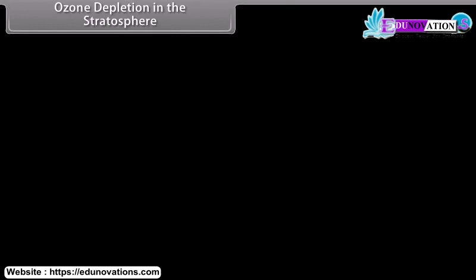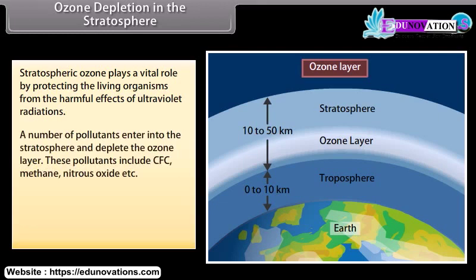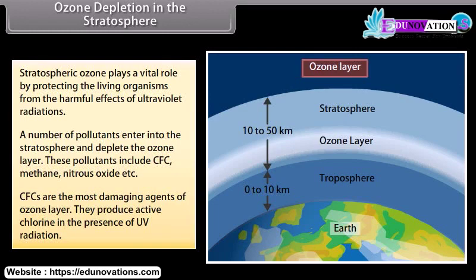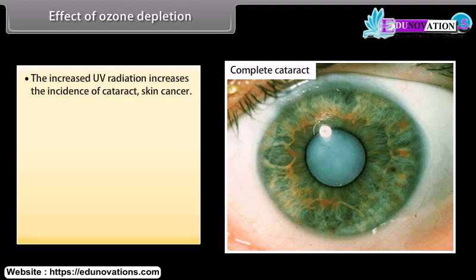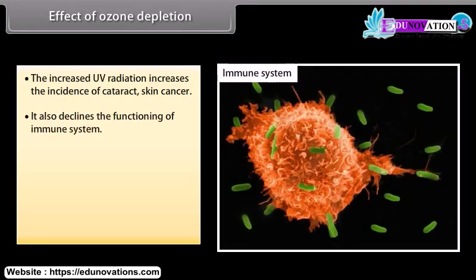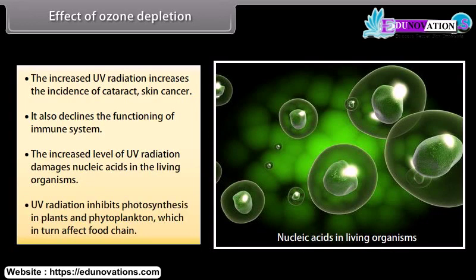Stratospheric ozone plays a vital role by protecting living organisms from the harmful effects of ultraviolet radiation. A number of pollutants enter the stratosphere and deplete the ozone layer, including CFCs, methane, and nitrous oxide. CFCs are the most damaging agents of the ozone layer — they produce active chlorine in the presence of UV radiation. Effects of ozone depletion include increased incidence of cataracts and skin cancer, declined functioning of the immune system, damage to nucleic acids in living organisms, and inhibition of photosynthesis in plants and phytoplankton, which in turn affects the food chain.